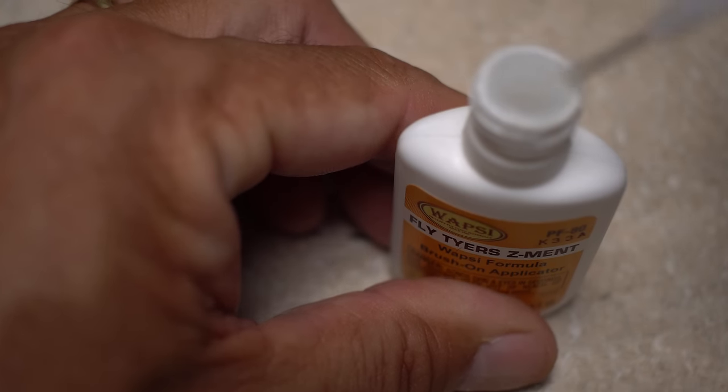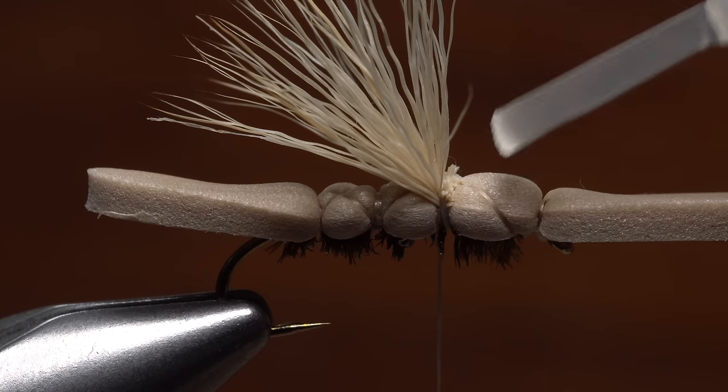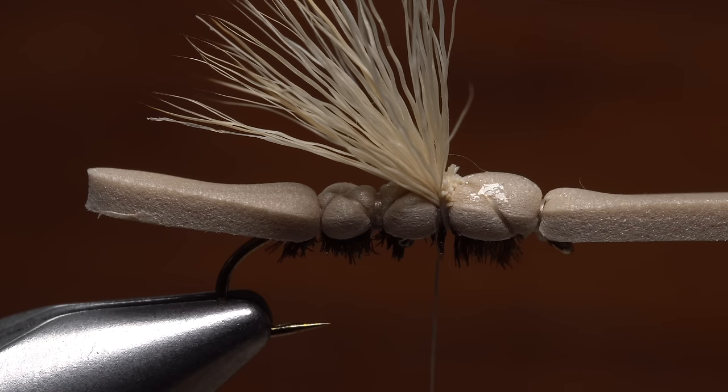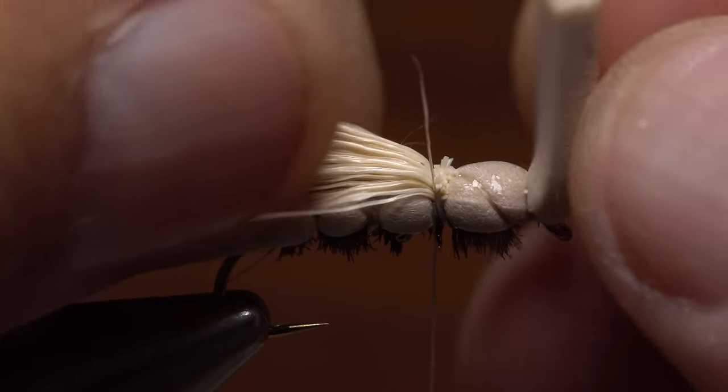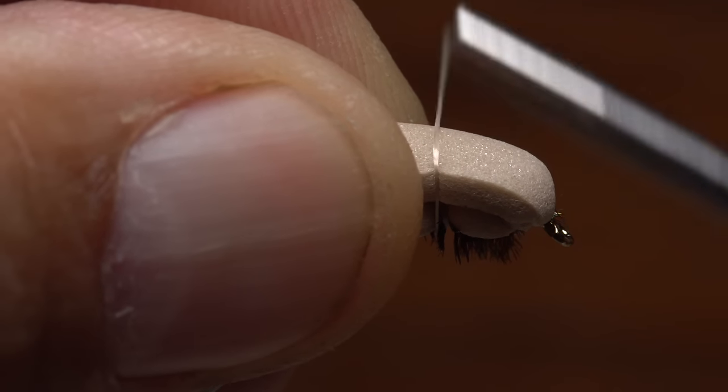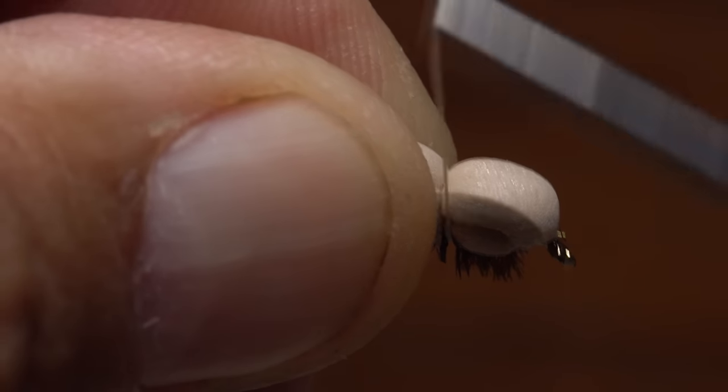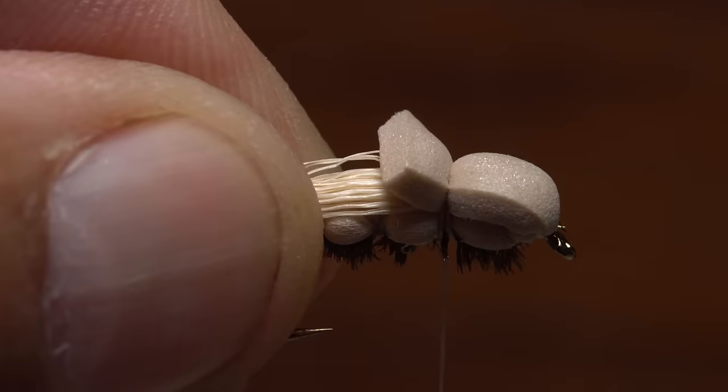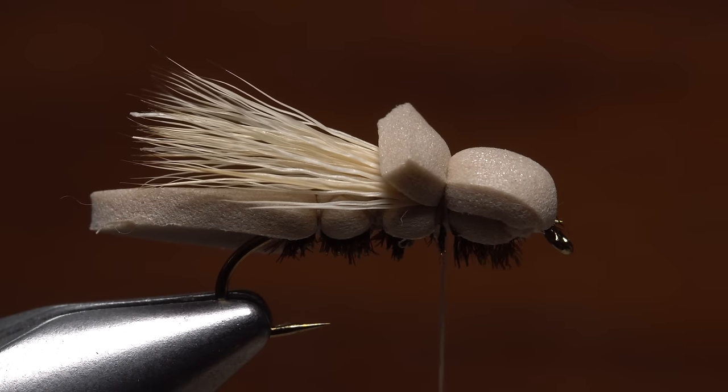Once again reach for the Z-ment or super glue and this time pick up only a small amount. Dab the adhesive on top of the front foam segment, then while pulling the elk hair rearward, fold the foam that's in front of the hook eye back and pin it down. Use a few wraps of tying thread to hold it in position, then snip the excess off to leave a little tab sticking up behind your tying thread.